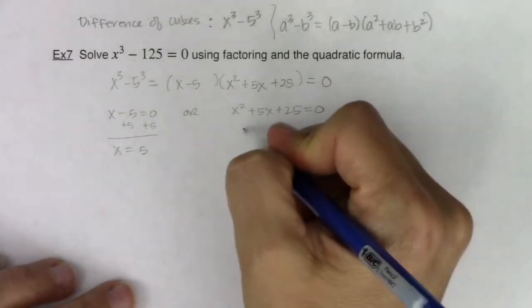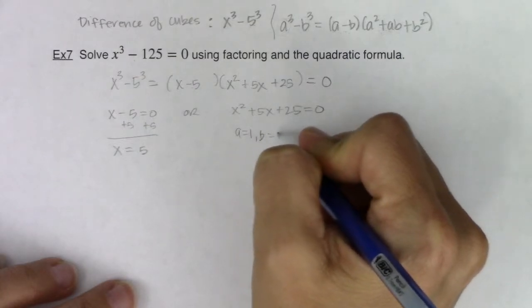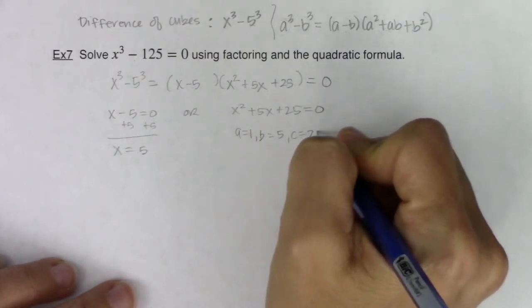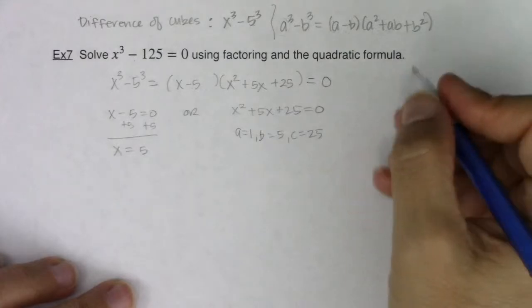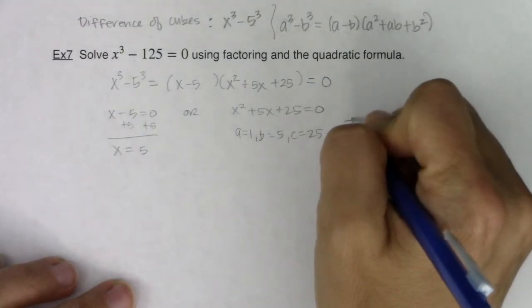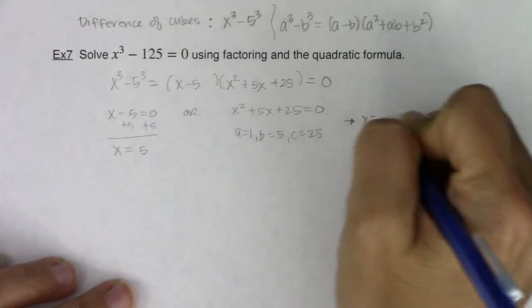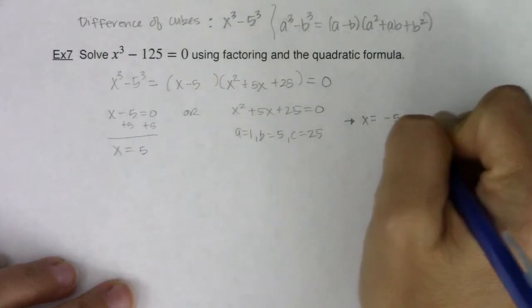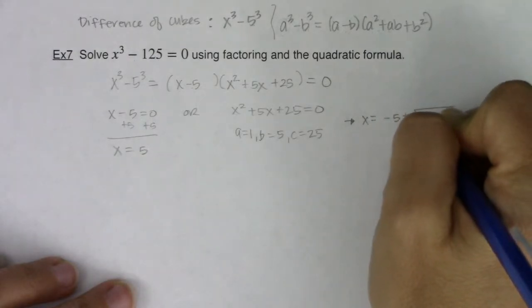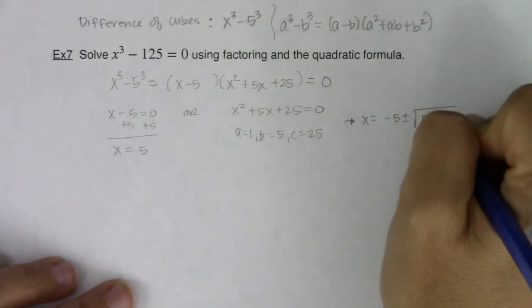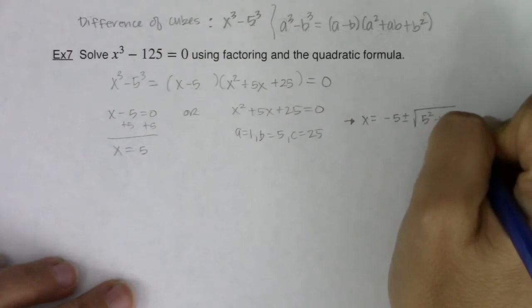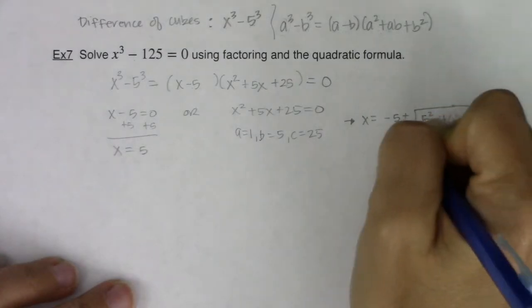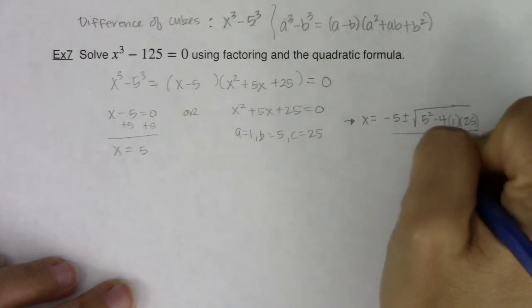I'm going to opt to use the quadratic formula, and I can see a is 1, b is 5, and c is 25. So from here, I'm going to be looking at x would be equal to negative b plus or minus the square root of b squared minus 4 times a times c all over 2a.